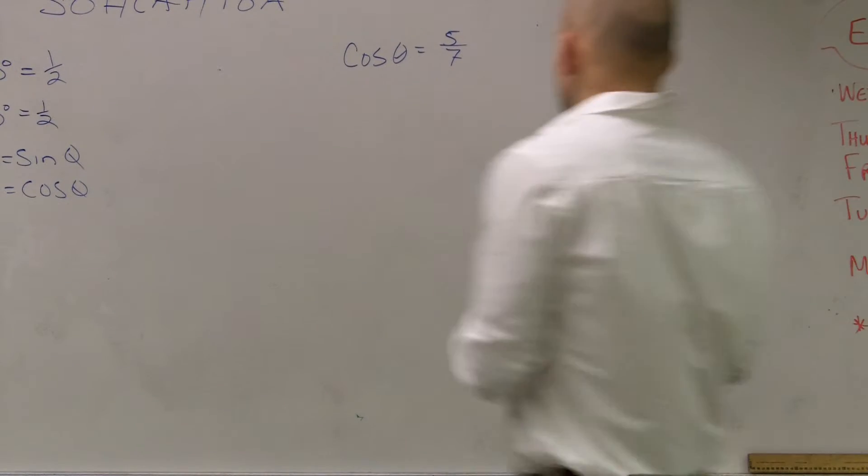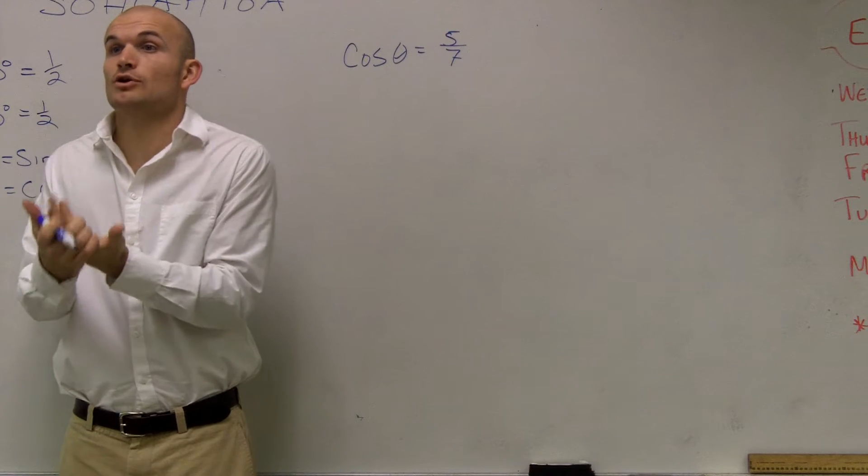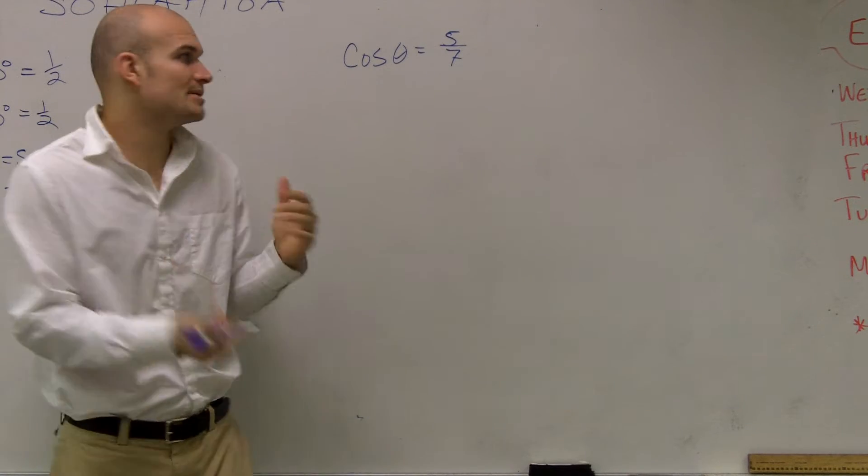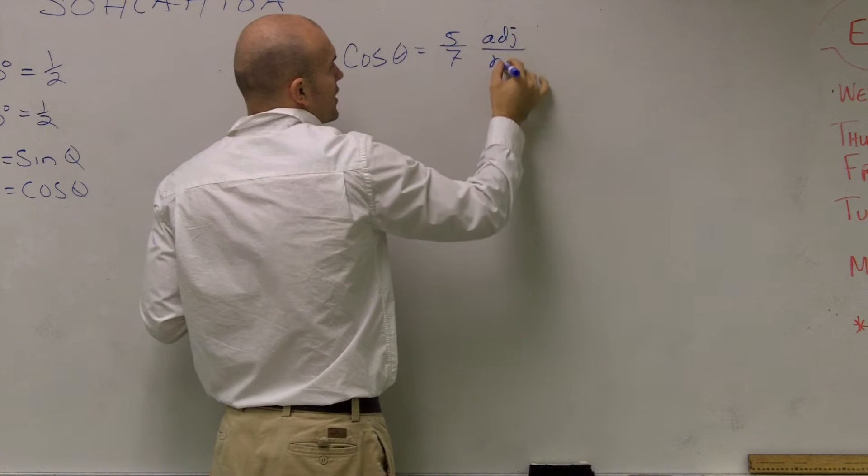What I want you to do is let's say I'm giving cosine of 5 over 7. The only thing you guys should know about cosine right now for this problem is you know that cosine, by using SOHCAHTOA, is your adjacent over your hypotenuse.